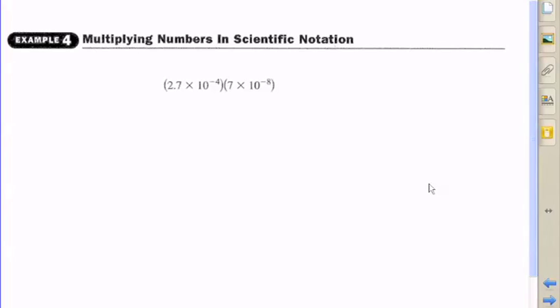Okay, so we're going to learn how to multiply numbers that are in scientific notation. We're being asked to multiply 2.7 times 10 to the negative fourth times 7.7 times 10 to the negative eighth.